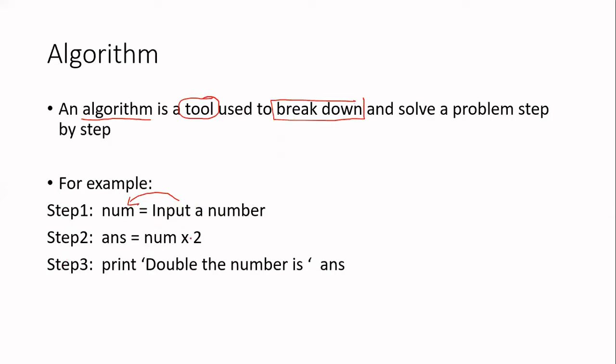Step two, we took the number and we're multiplying it by two and the result is then stored in a variable called ans. Finally, in step three we printed the answer. First a message to say double the number is, and then we would print the answer. So this is how we went about writing an algorithm.